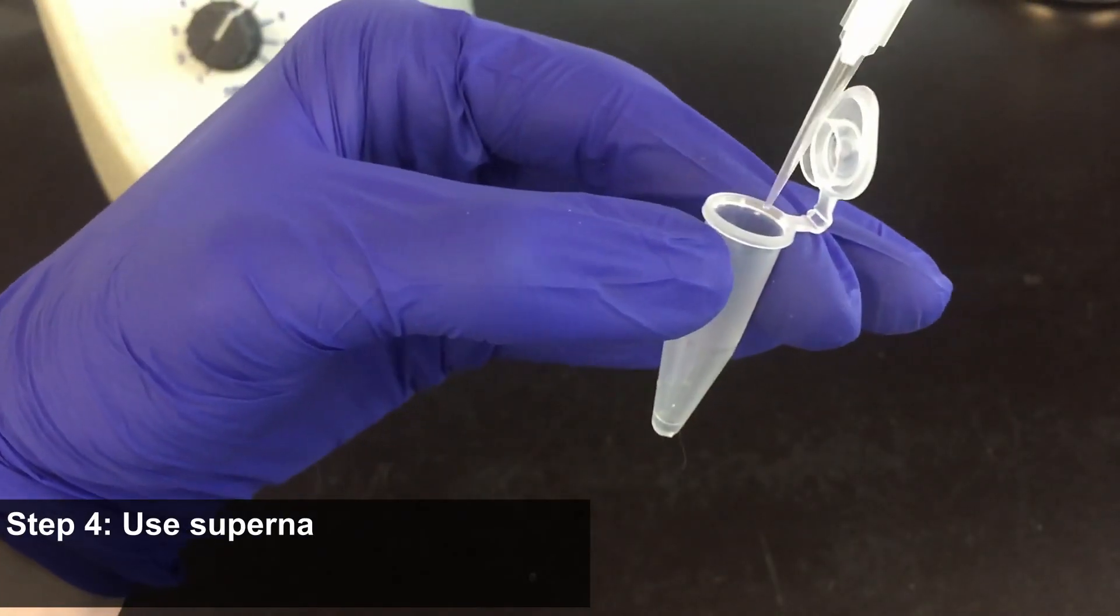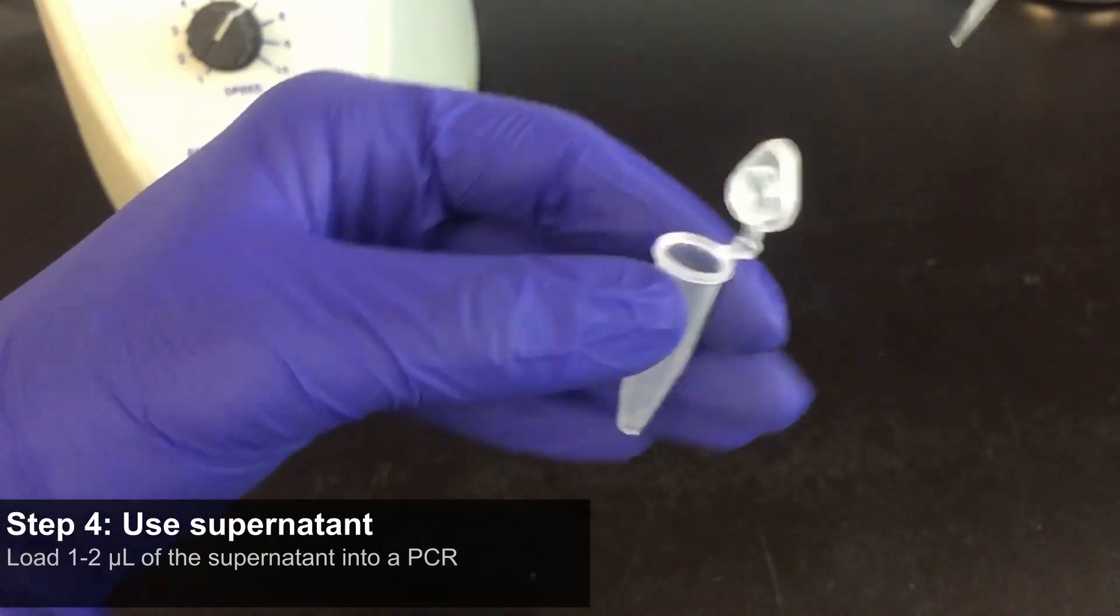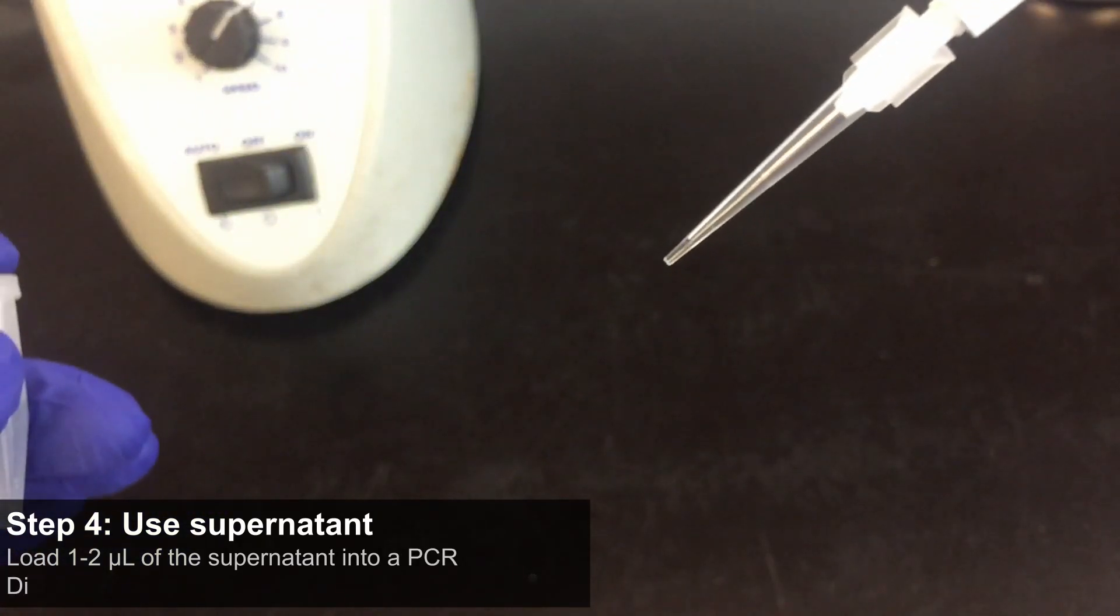Step 4: Use supernatant. Load 1 to 2 microliters of the supernatant into a polymerase chain reaction. Dilute or add fewer cells if PCR inhibition is observed.